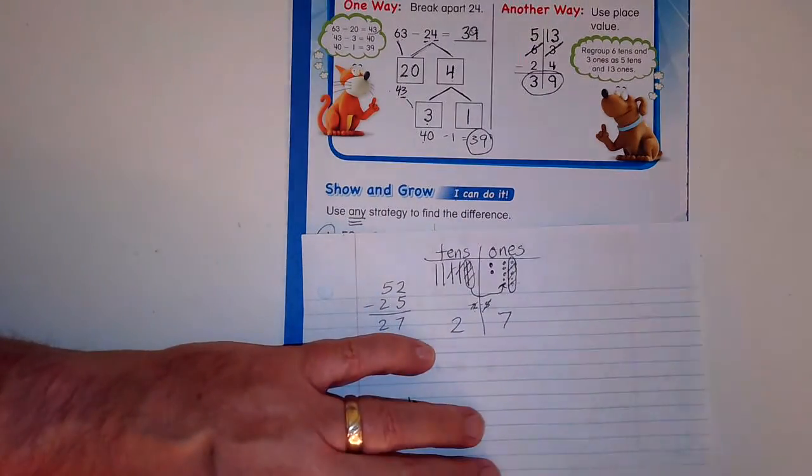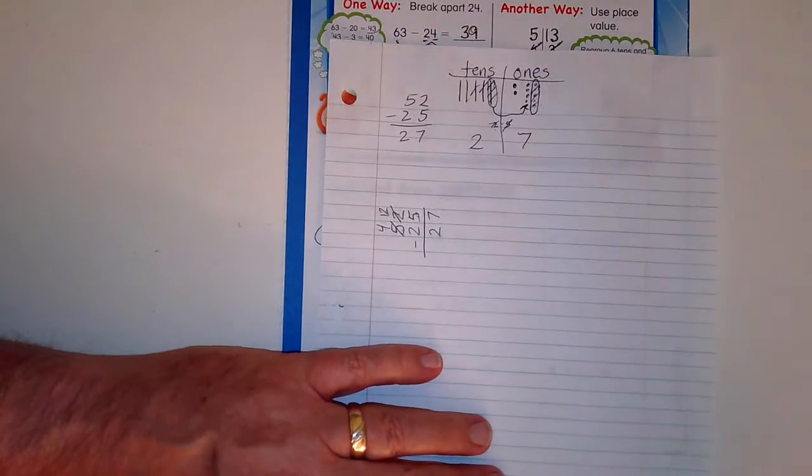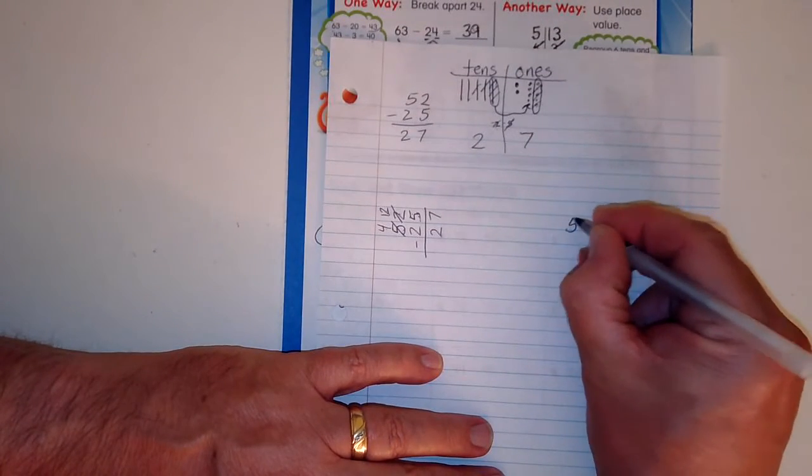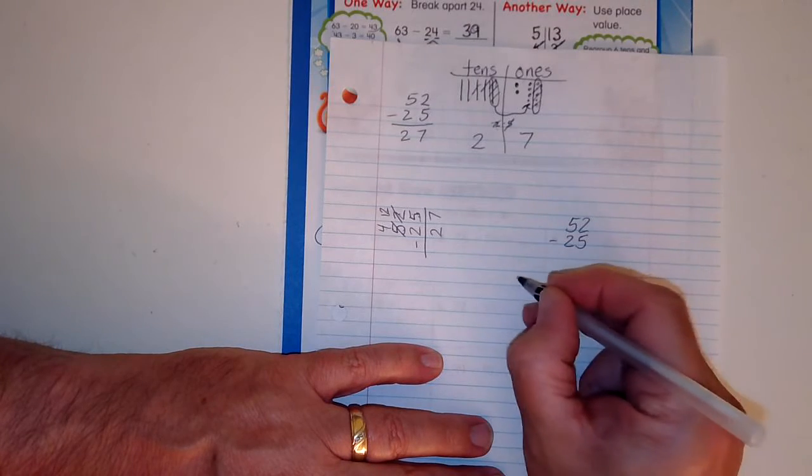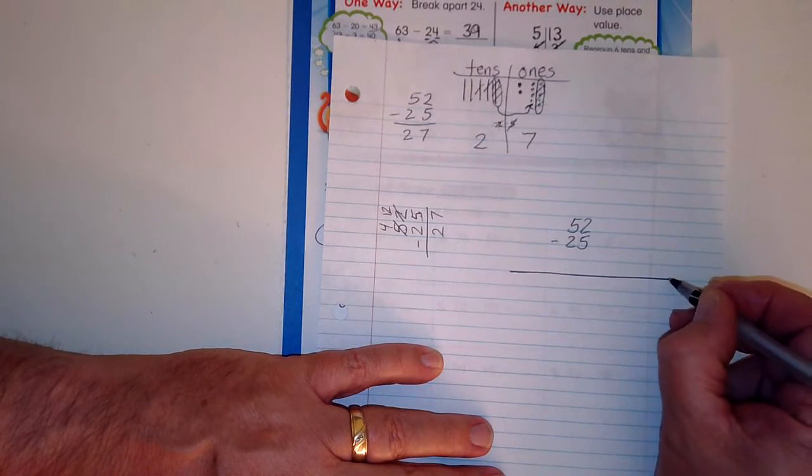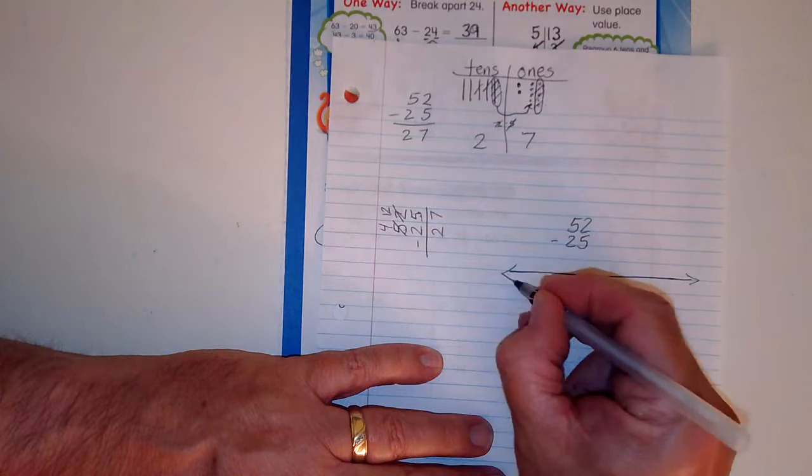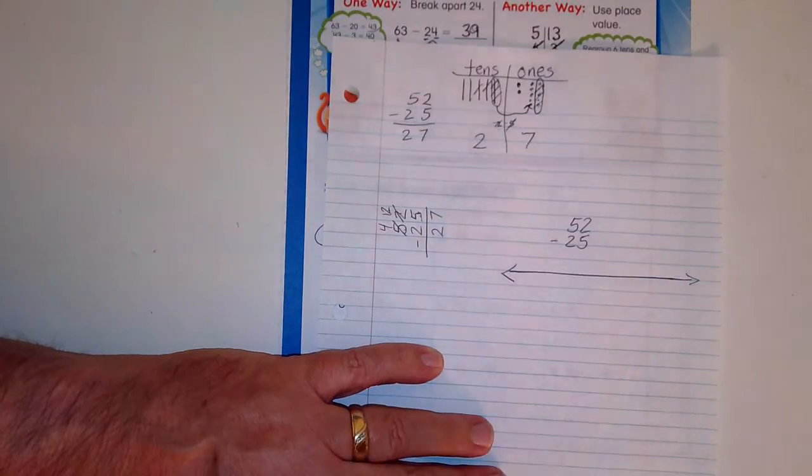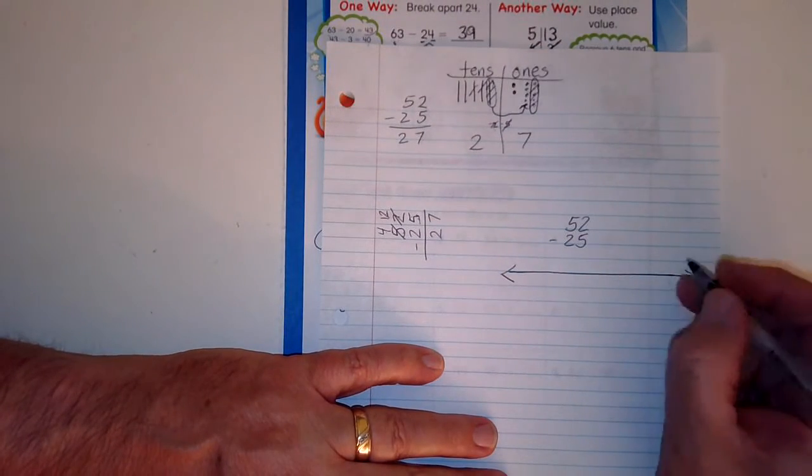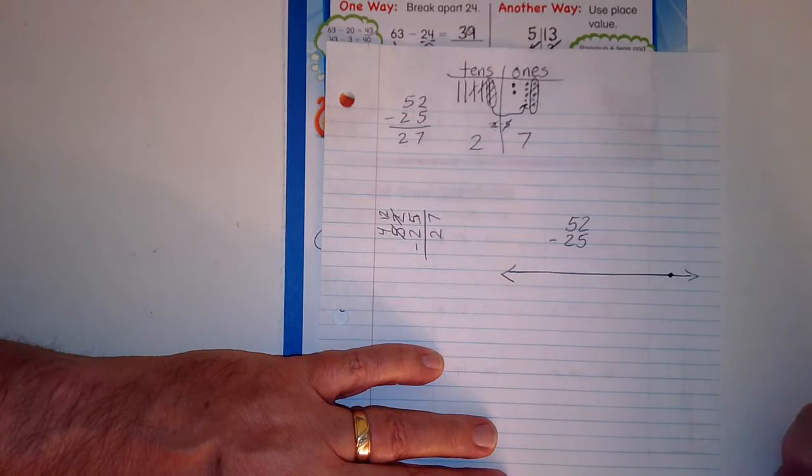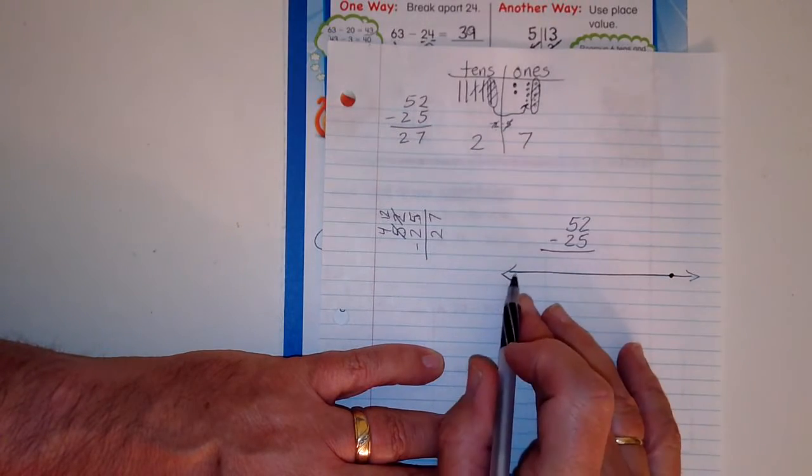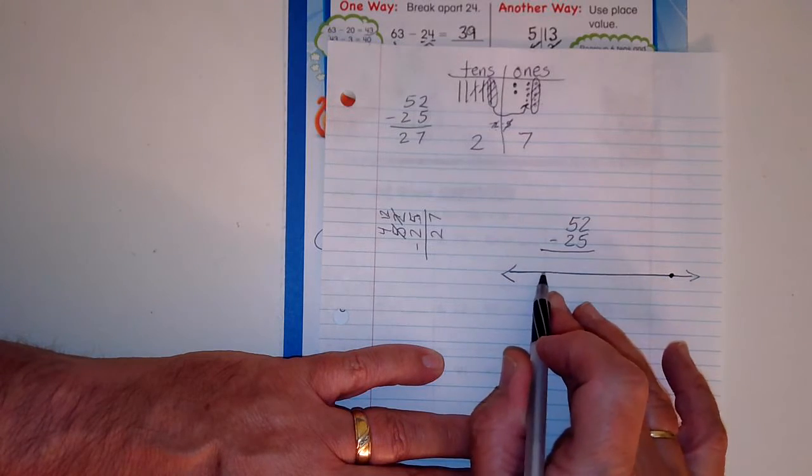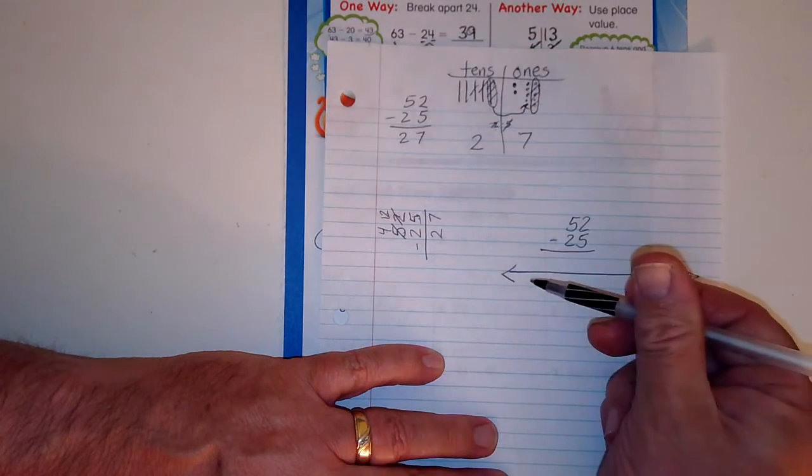52 minus 25 this way is 27, but guess what? It says we can use any way. Let's do it another way: 52 minus 25. Here it is - our open number line. What do I start with? Anything. I don't need to have 0, 1, 2, 3, 4. If my number line goes this way and this way, I can start wherever I want. This time I'm going to start with 52.